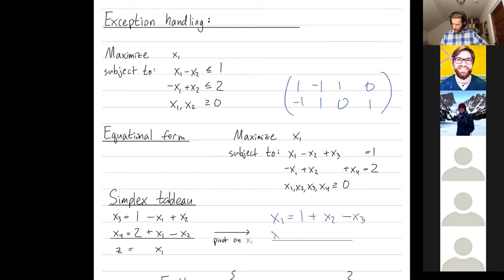And then in the equation for x4, I replace x1 with that line I just wrote down, 1 plus x2 minus x3. So this becomes 3. The x2's cancel. And then I have minus x3. All right. And the function that we're now trying to optimize is x1, which is 1 plus x2 minus x3.